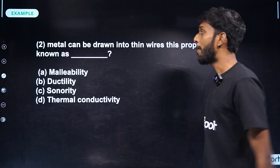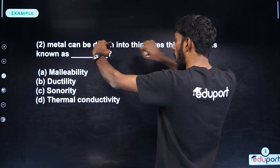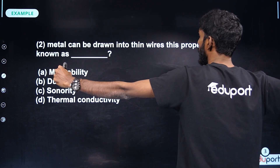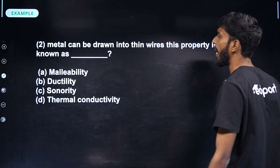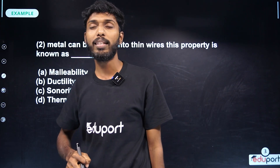Metal can be drawn into thin wires. This property is known as ductility.